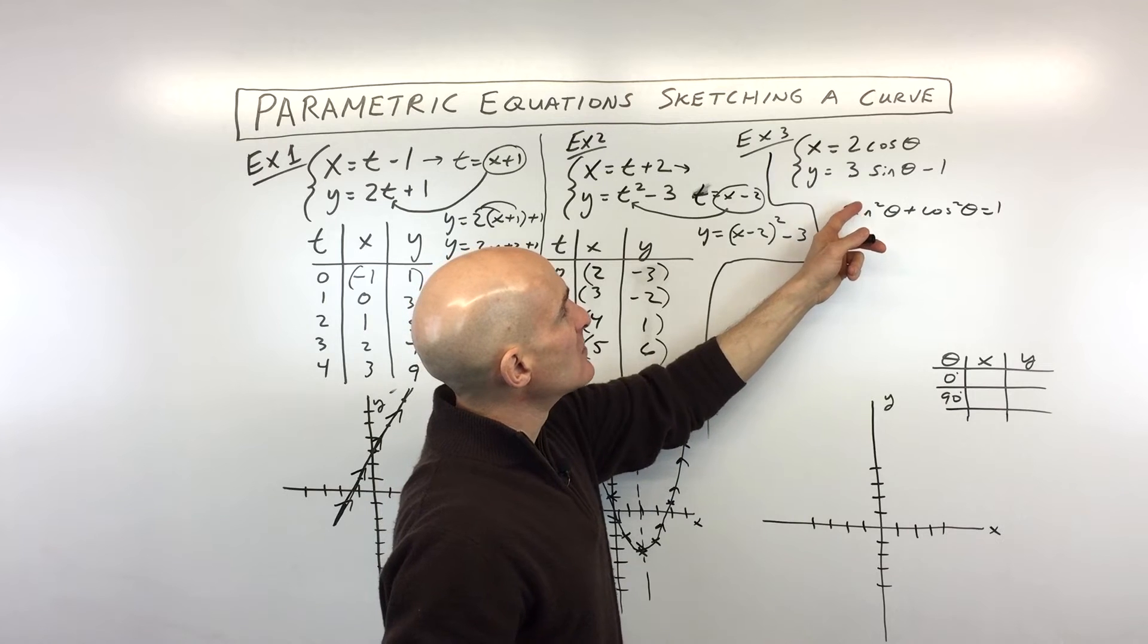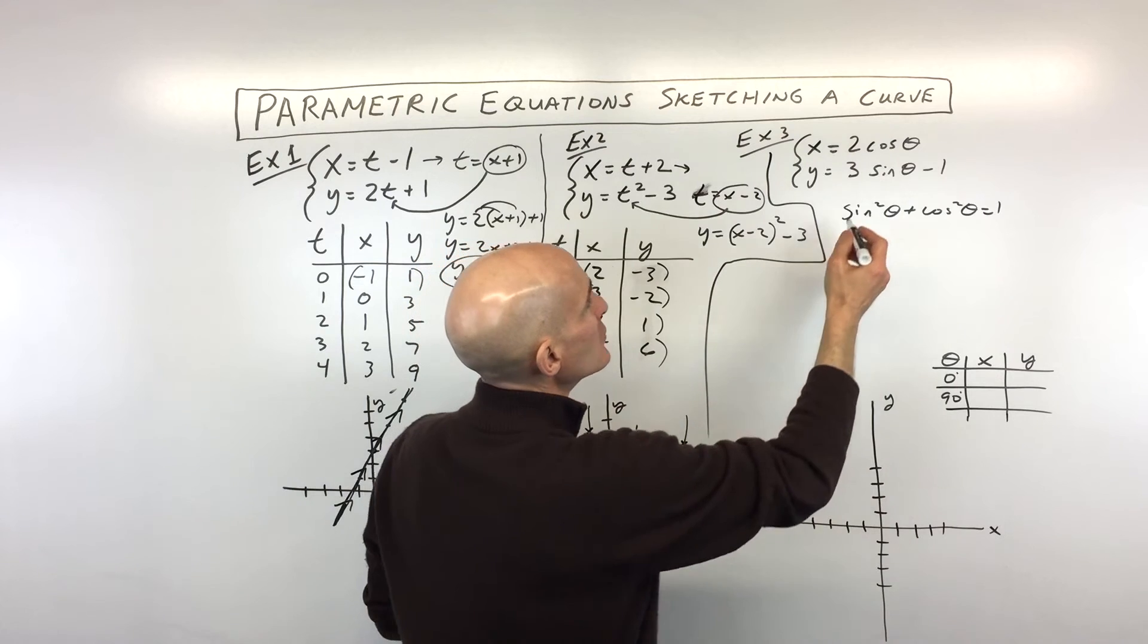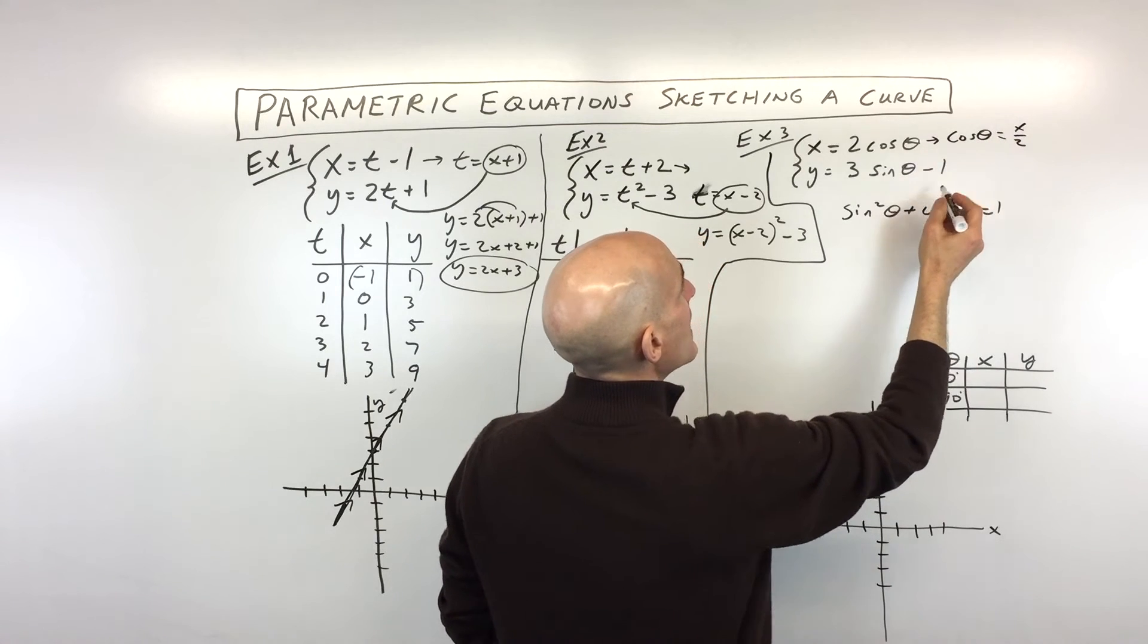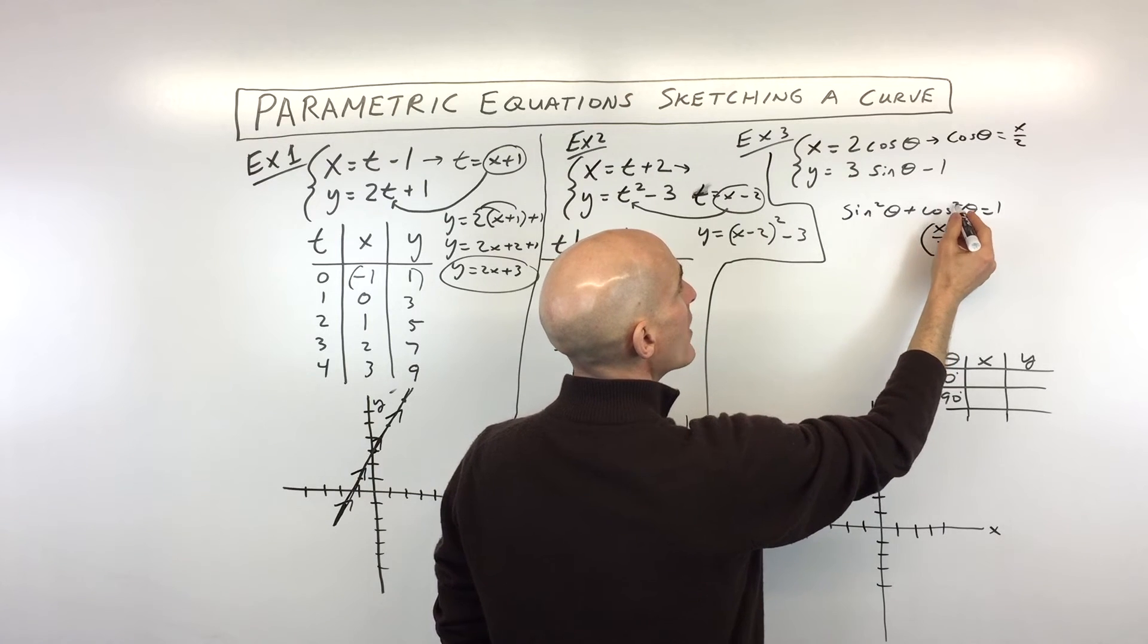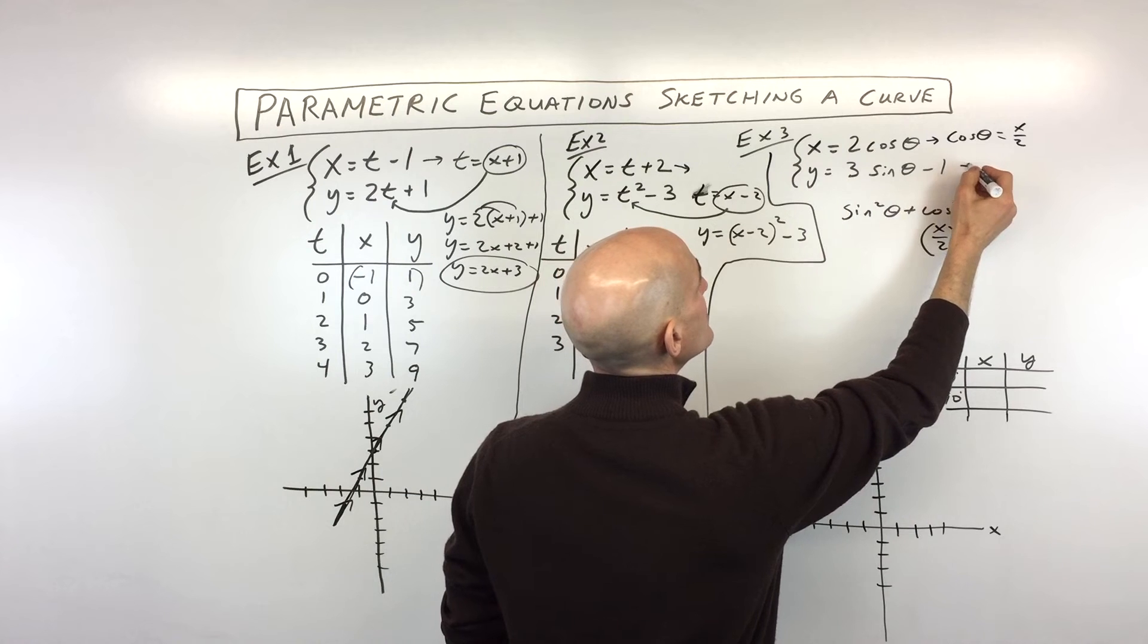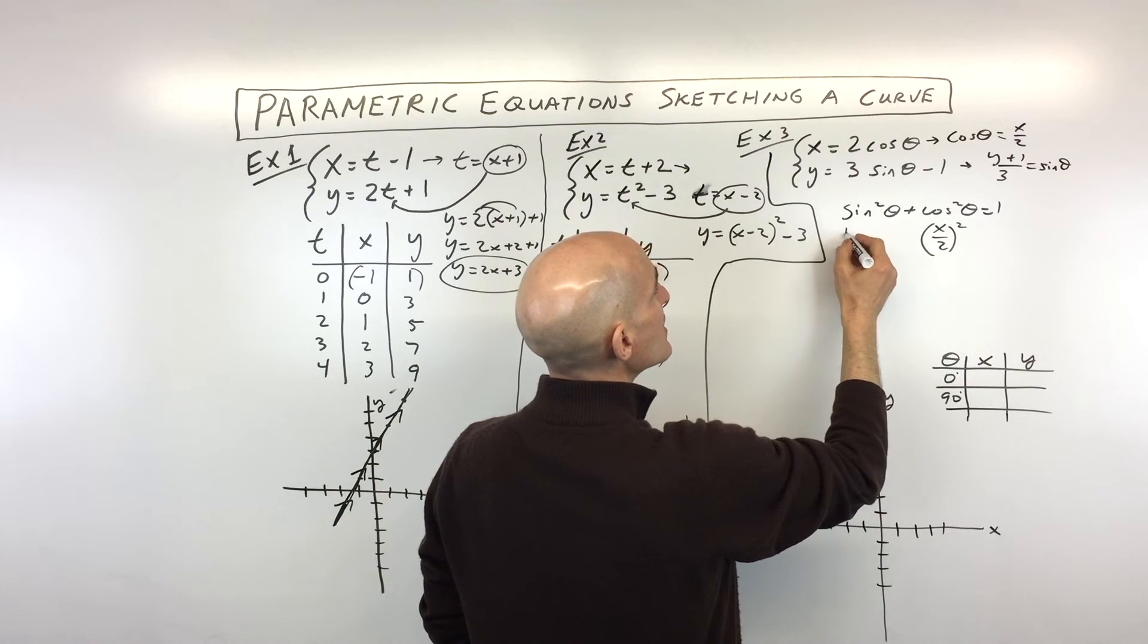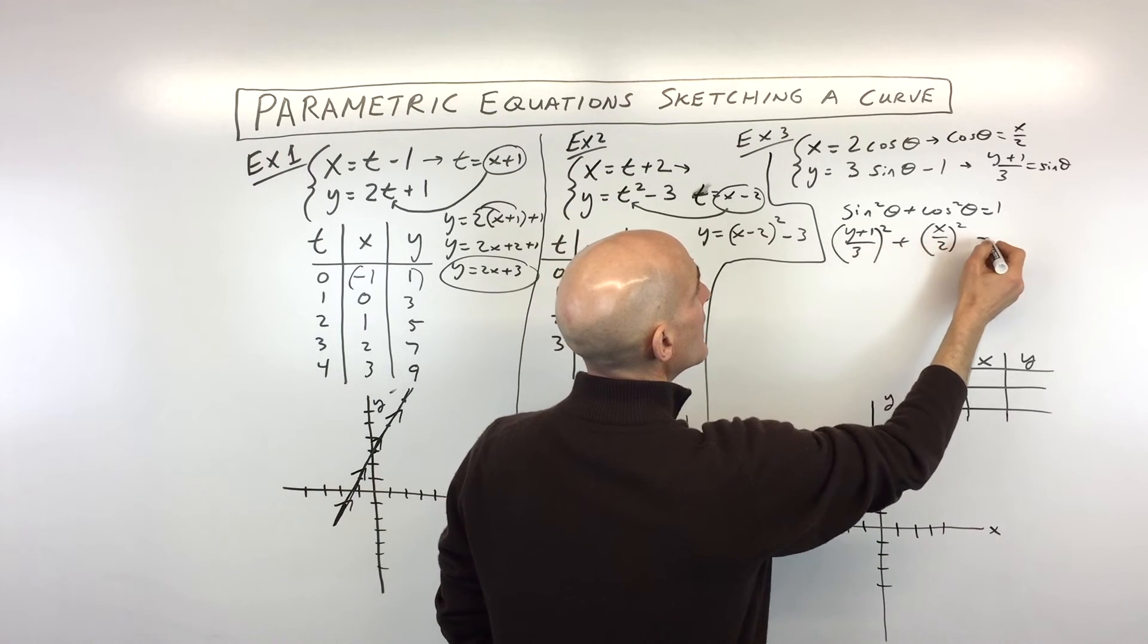So what we're going to do now is we're going to rewrite these two equations solving for cosine or sine. So if we do that, here you can see cosine of theta equals x divided by two, just dividing both sides by two. And what we can do then is substitute that in place of cosine here. So that's x over two squared, because cosine is squared. This one, we're going to add one and divide by three. So this is actually y plus one divided by three equals sine theta. So we're going to put that in here. So that's y plus one over three squared. And that equals one.